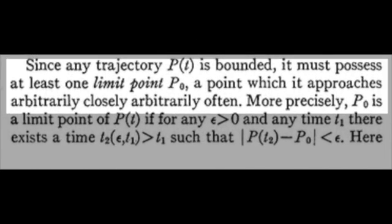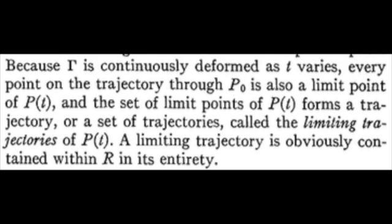Our first definition is that of a limit point, which is a point that any trajectory — trajectory being a moving particle that represents the evolution of a state — approaches arbitrarily closely, arbitrarily often. Now, because our phase space is continuously deformed throughout time, each trajectory that passes through a point is also a limit point of that trajectory. And if we were to take all of those limit points and make a trajectory out of them, we just call that the limiting trajectory.